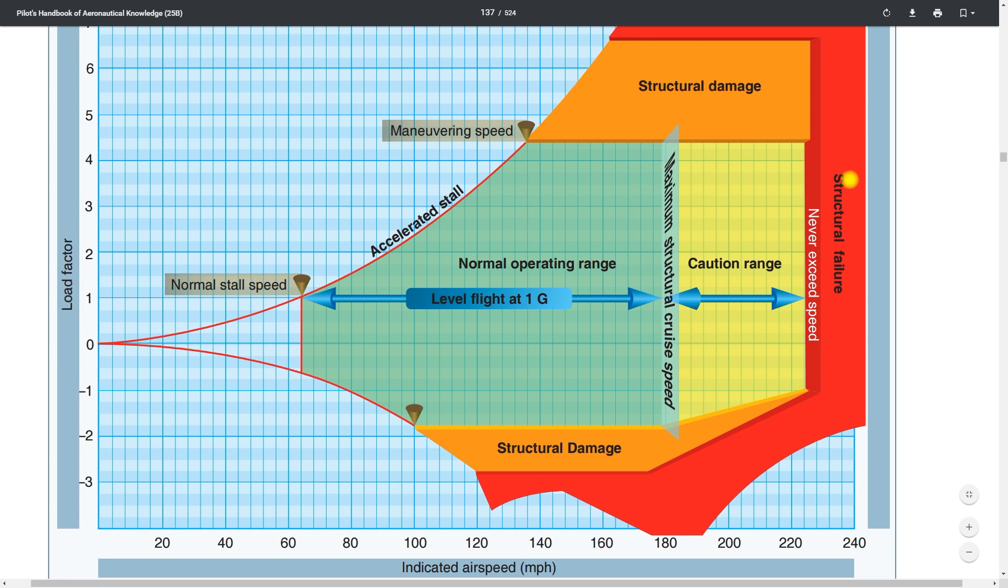And so above the red line, structural failure occurs. Down here, we can see structural failure occurs. And around here, we can see structural damage. So what's the difference? Well, structural failure, wings fall off. Structural damage, wings get bent, hopefully. And then of course in the caution range here, although it's yellow, there's no damage or failure occurring as long as you're staying in smooth air. And we'll talk a little bit about that in a moment here.